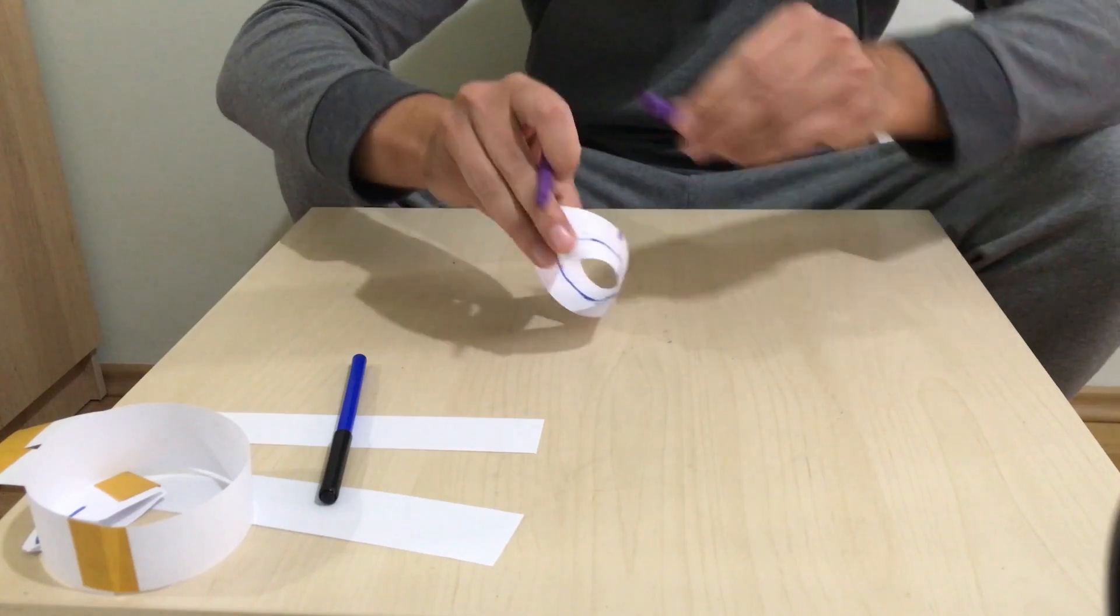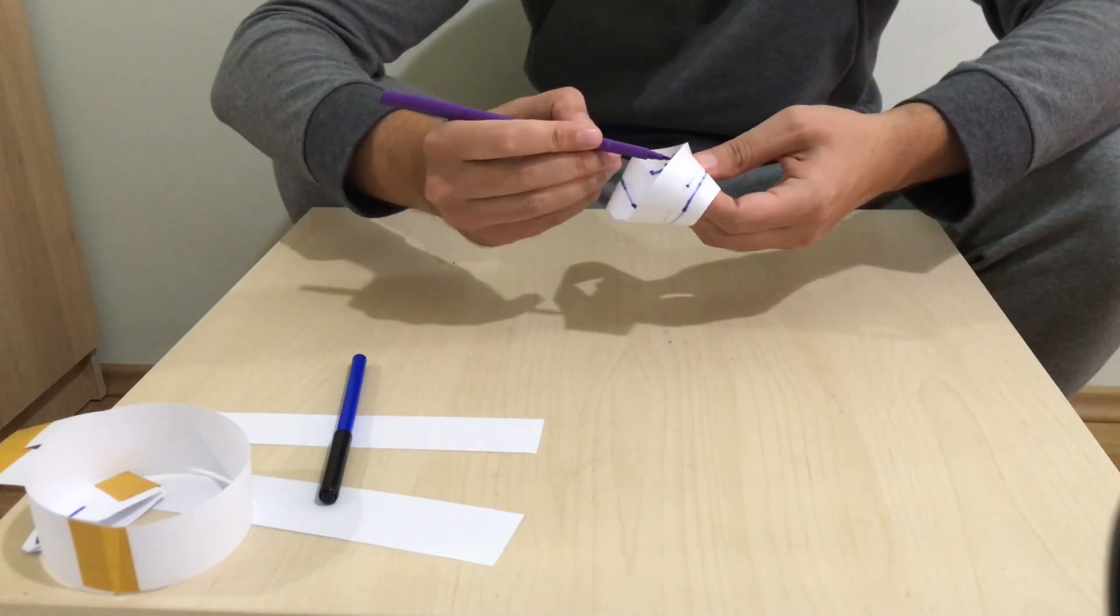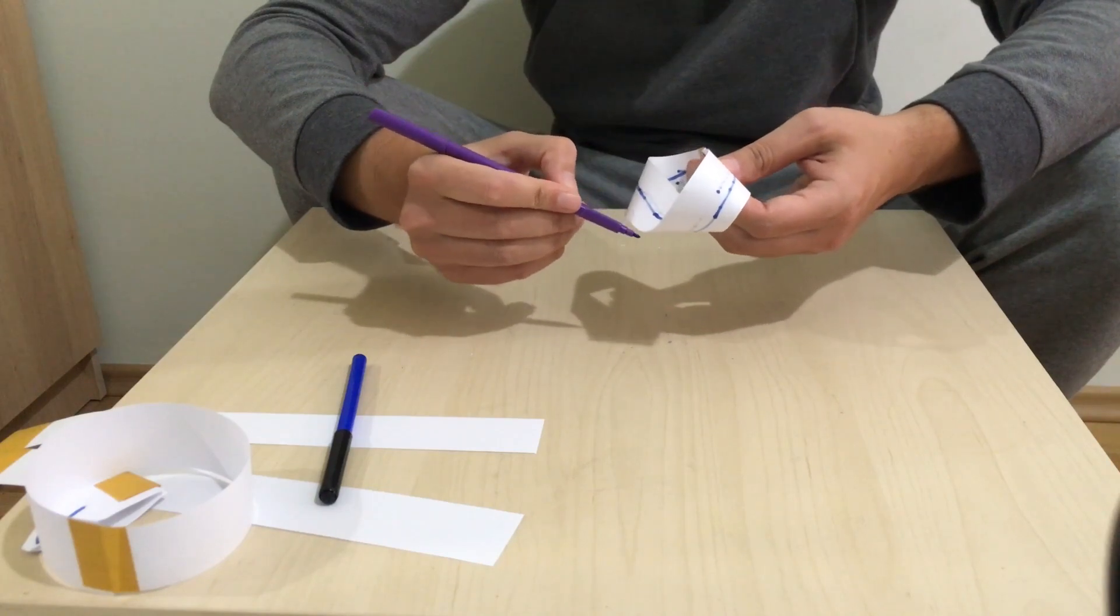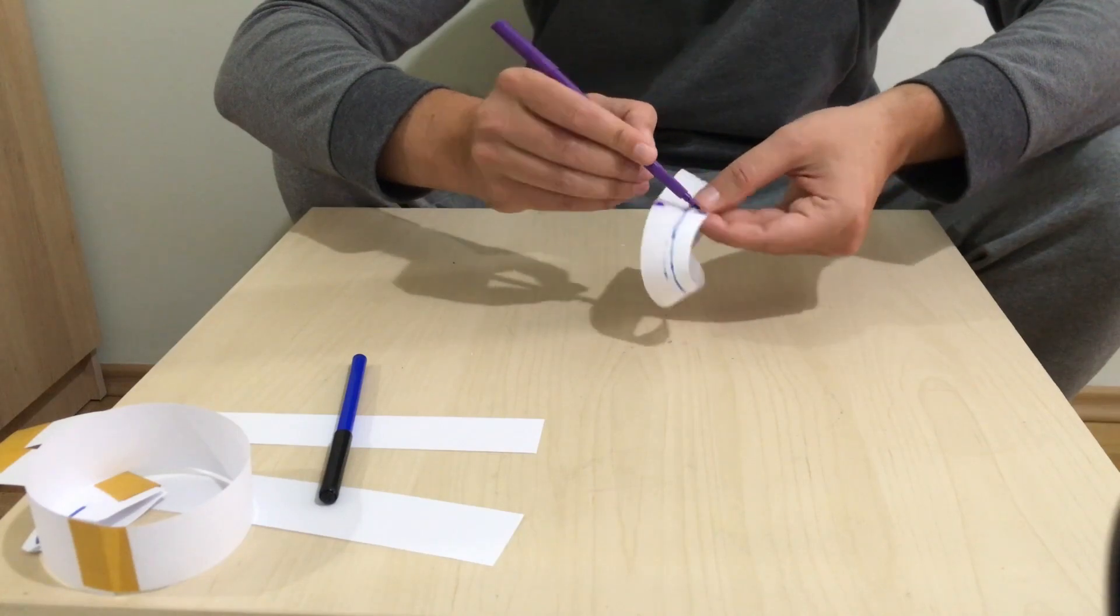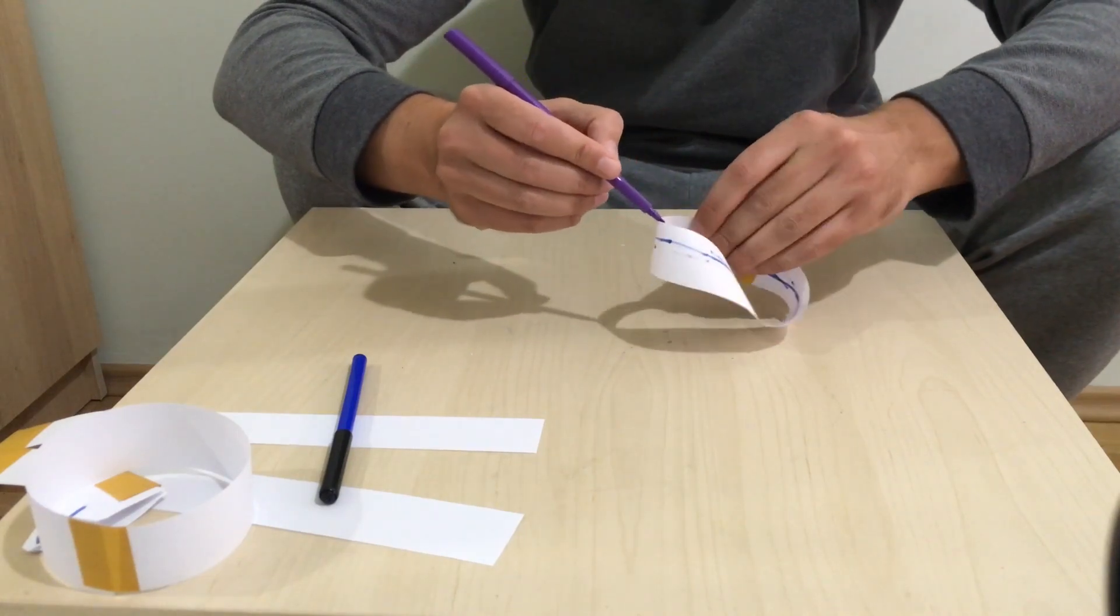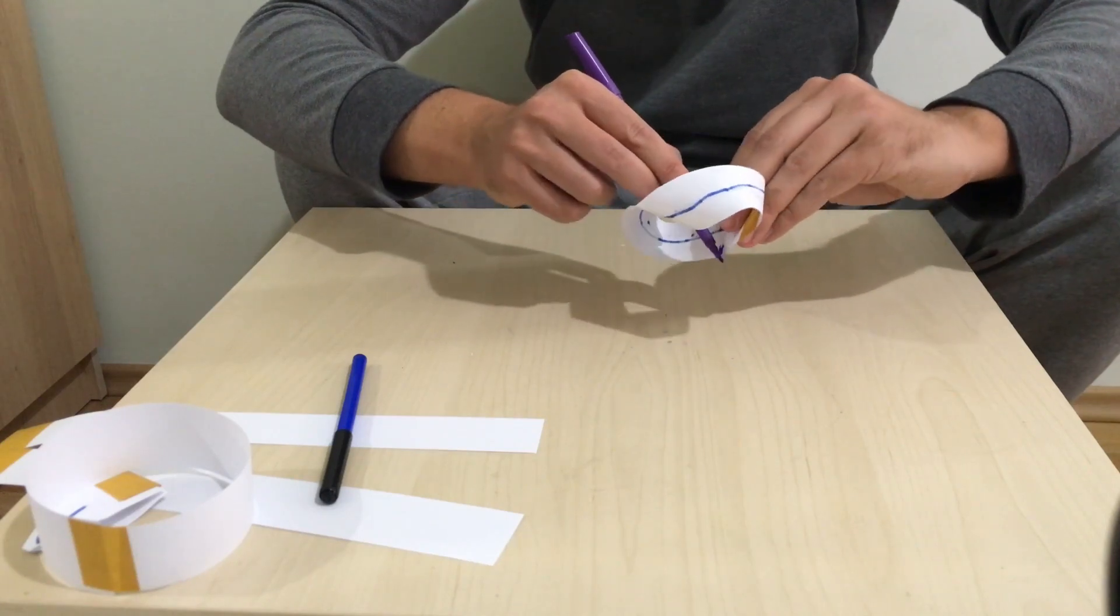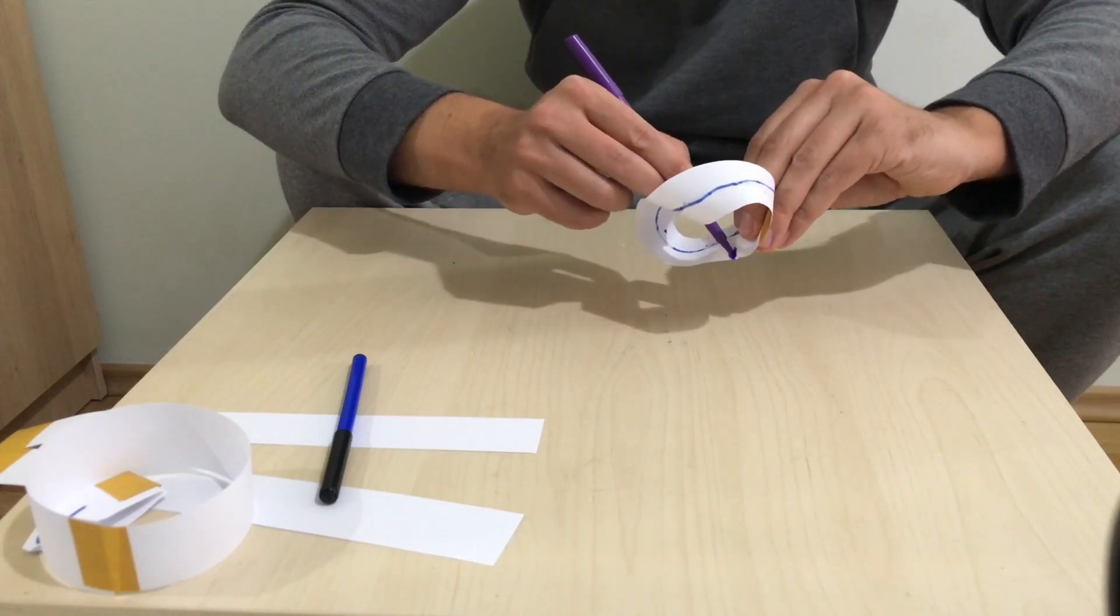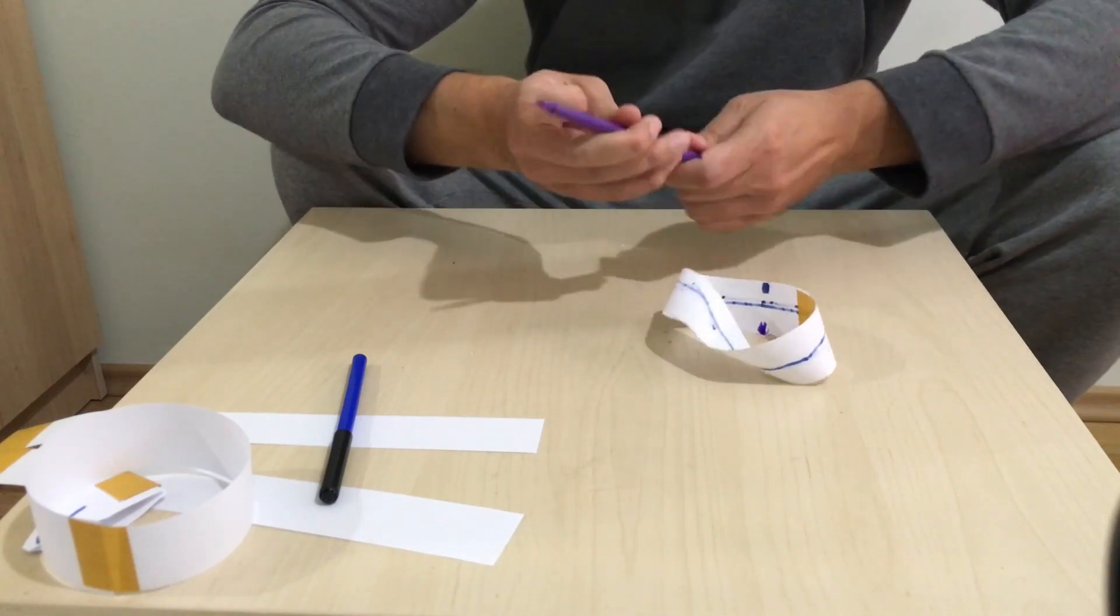Then I go back to the purple point moving in one direction and following the edge. You see I come to the blue point. Now I continue to follow the edge and I come to the blue point over here. So it's only one edge—one surface and one edge. You can do it easily at home.